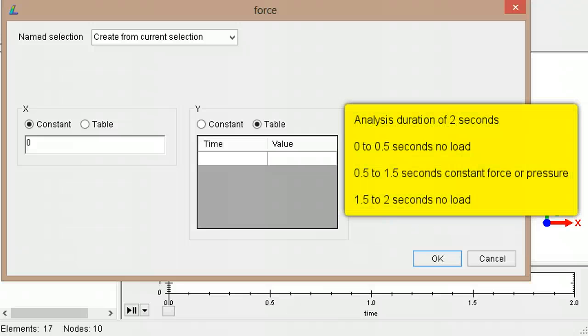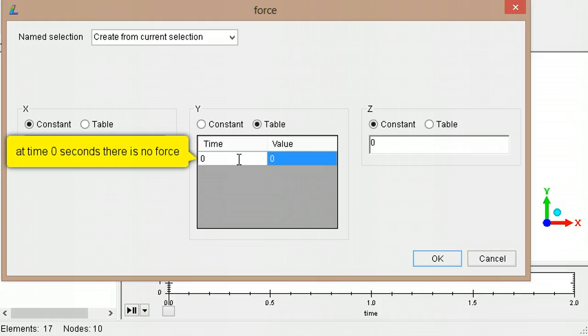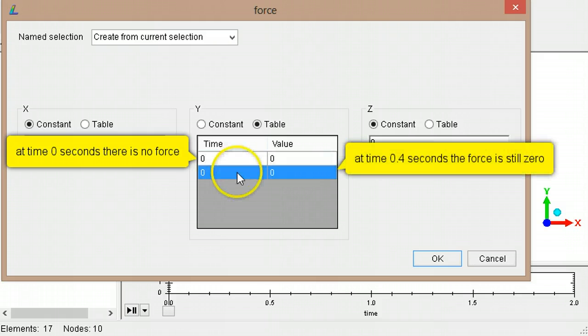For example, if the total duration of an analysis is two seconds, at 0.5 seconds a force is applied and then held steady for one second before being removed. In the table, a zero load would be specified at time zero and at time 0.4 seconds,